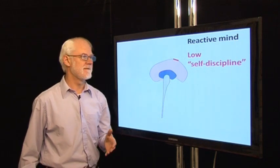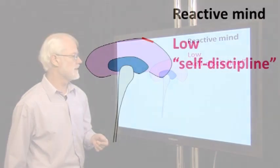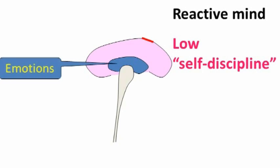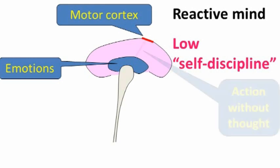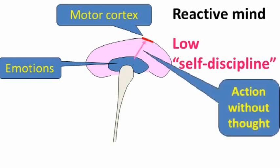Let's look at a pupil with reactive mind, with low self-discipline. An emotion comes up in the emotional part of the brain and immediately connects to the motor cortex to take some action. They may say whatever comes into their mind, they may get up and move, they may take something which doesn't belong to them. It's action without thought.